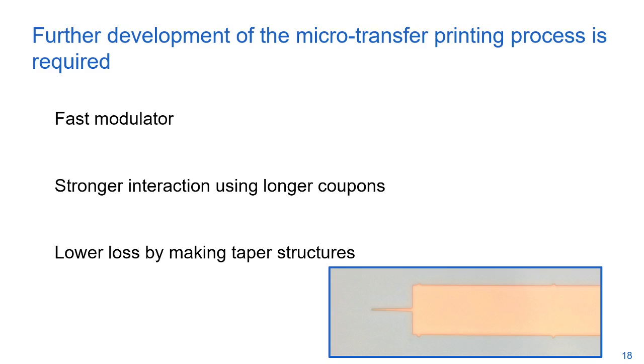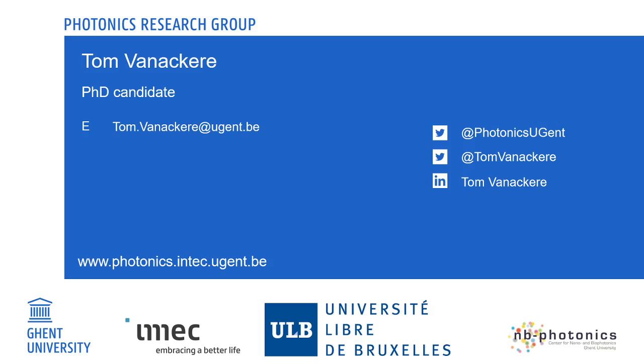We will continue to further develop the transfer printing process to create a fast modulator while trying to increase the interaction strength by printing longer coupons. We are also looking into reducing losses by adding taper structures to the coupons. Here you can see an image of an early printing test for coupons with tapers. Finally, I would like to encourage everyone to look at different material platforms when designing photonic circuits because each material has its strengths and transfer printing might be able to bring them together.